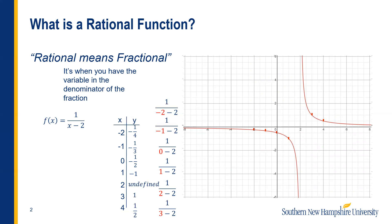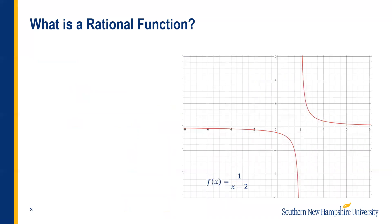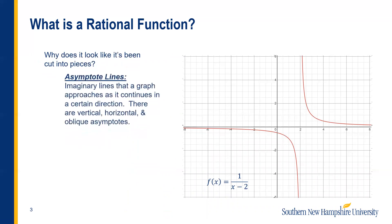Maybe we want to figure out why the graph looks this way. If you noticed, it looks like it's been cut into two pieces. The reason it looks cut is a characteristic of rational functions when there's a variable in the denominator, and it's called asymptote lines.